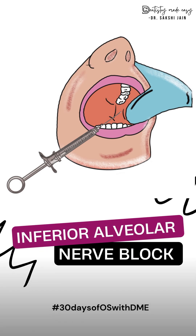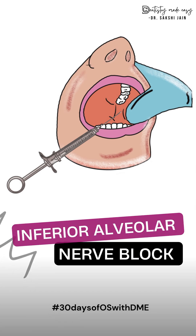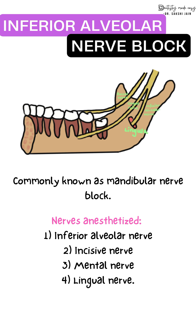Today's topic is the inferior alveolar nerve block, also known as the mandibular block. It is the second most common injection used in the mandible, but it also has the highest percentage of clinical failure. It is specially used for quadrant dentistry, and bilateral inferior alveolar nerve block is rarely indicated in dental treatment.